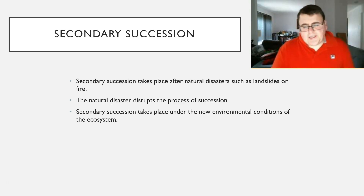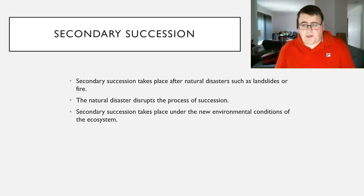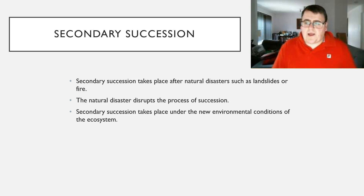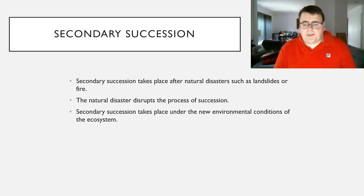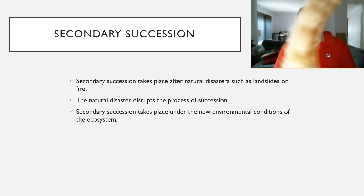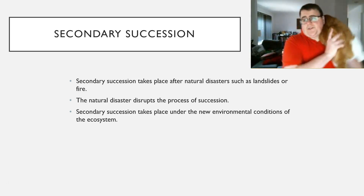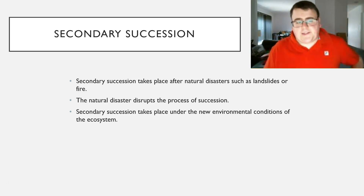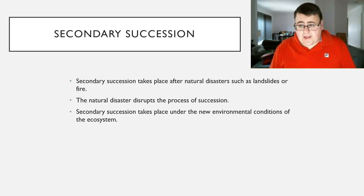We also have secondary succession. Secondary succession occurs after primary succession has already taken place and a community has started to thrive. Then a natural disaster — like a landslide, a fire, or a hurricane — comes along and destroys a majority of the ecosystem, disrupting the process of succession. Secondary succession will then take place: there are new environmental conditions, so the ecosystem will start to change according to those conditions and succession will take place again. It's the second succession — secondary succession. That should be the end of this PowerPoint. Sorry it was a long one.